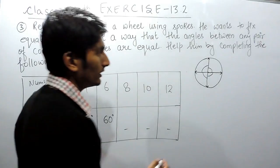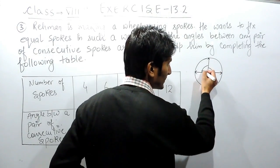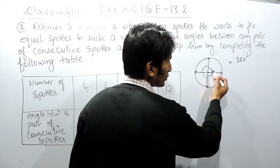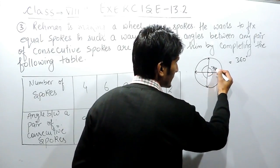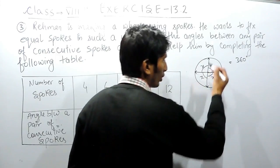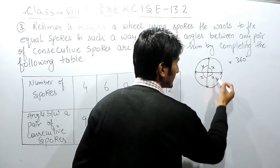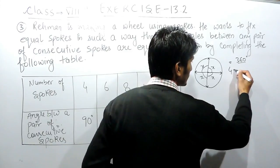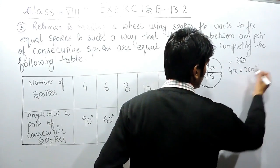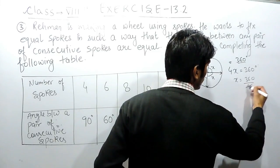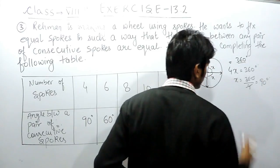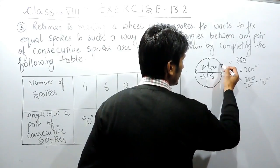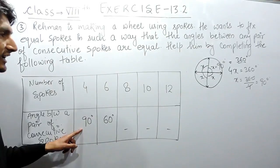Because we know that the angle at any point — if I consider this complete angle — it will be equal to 360 degrees, and all these angles are equal. If each angle is x, then x + x + x + x = 4x = 360 degrees. So the value of x will be 360 divided by 4, which is 90 degrees. Because there are 4 angles, we divide by 4 to get 90 degrees. This is how the first angle is found.